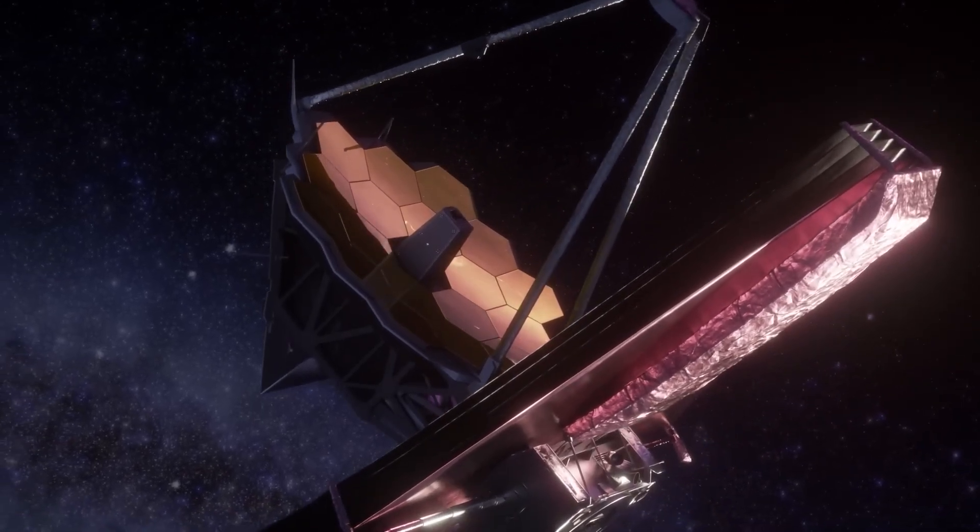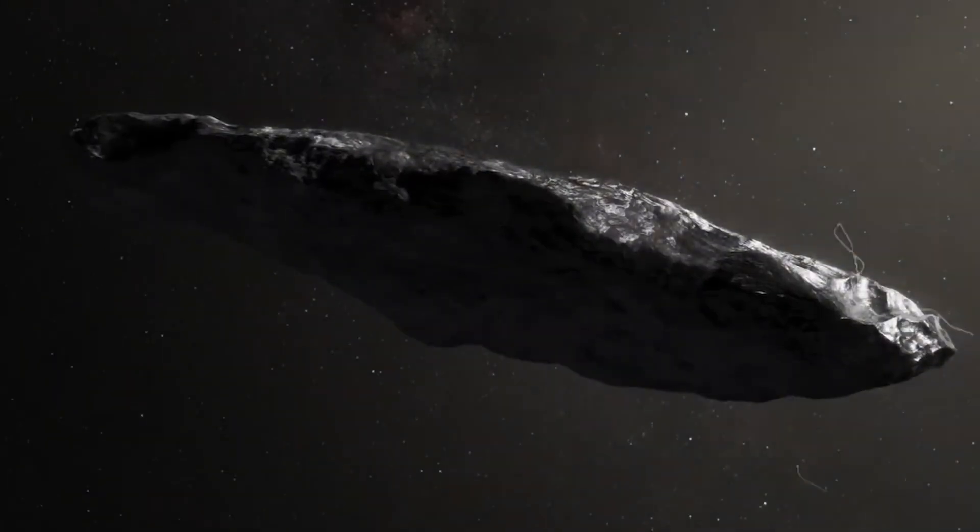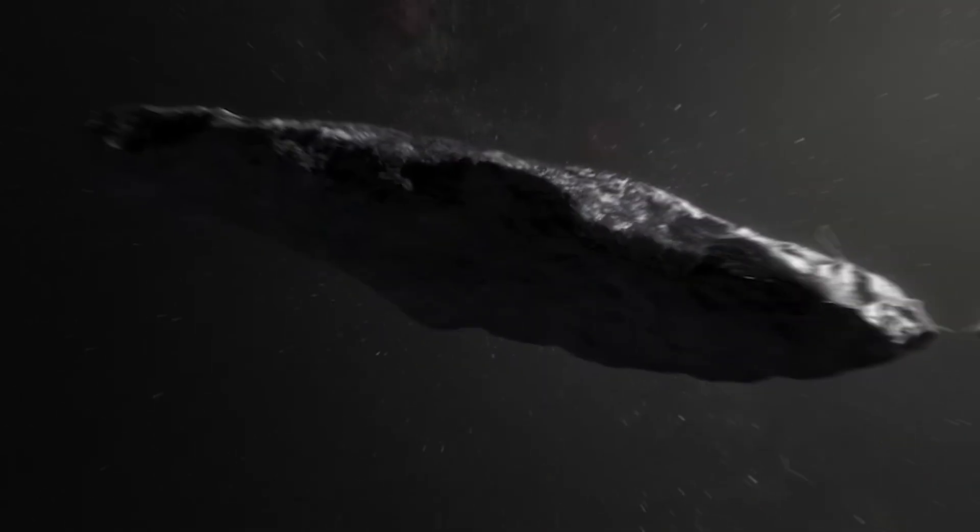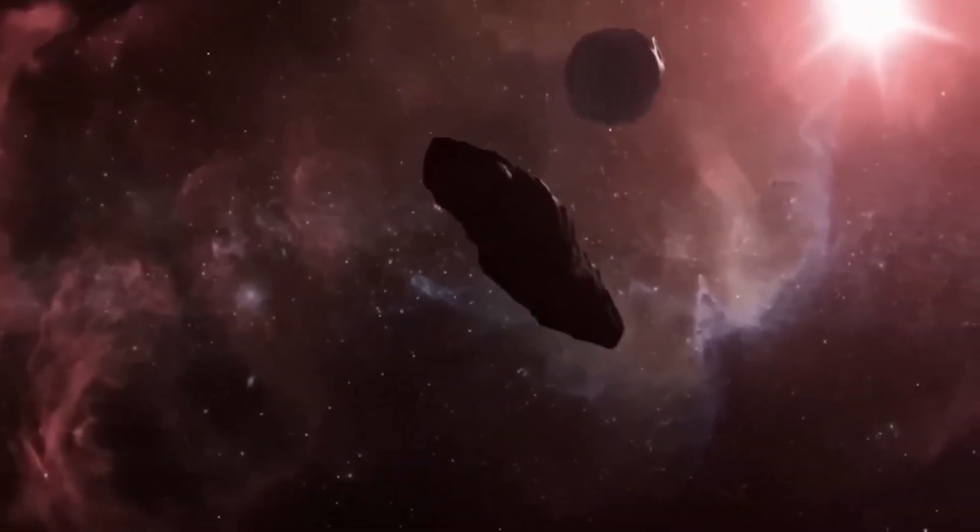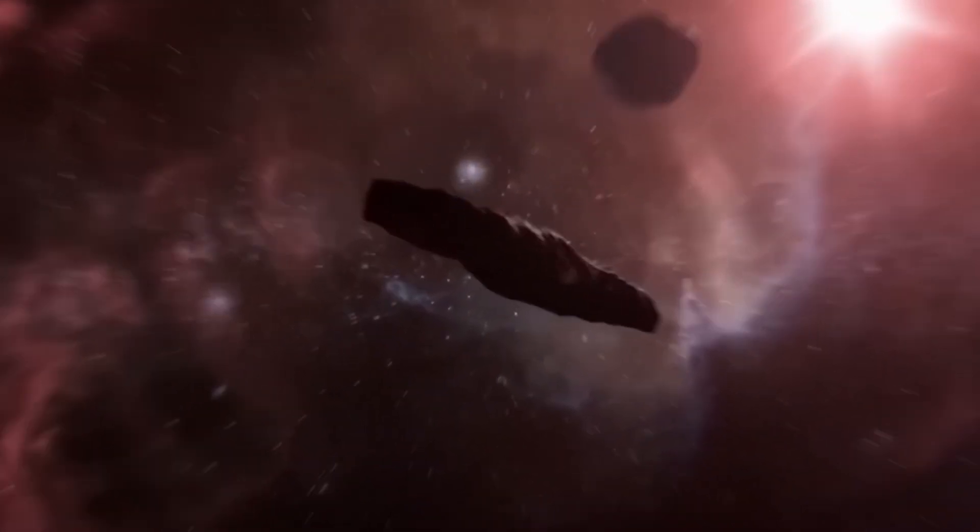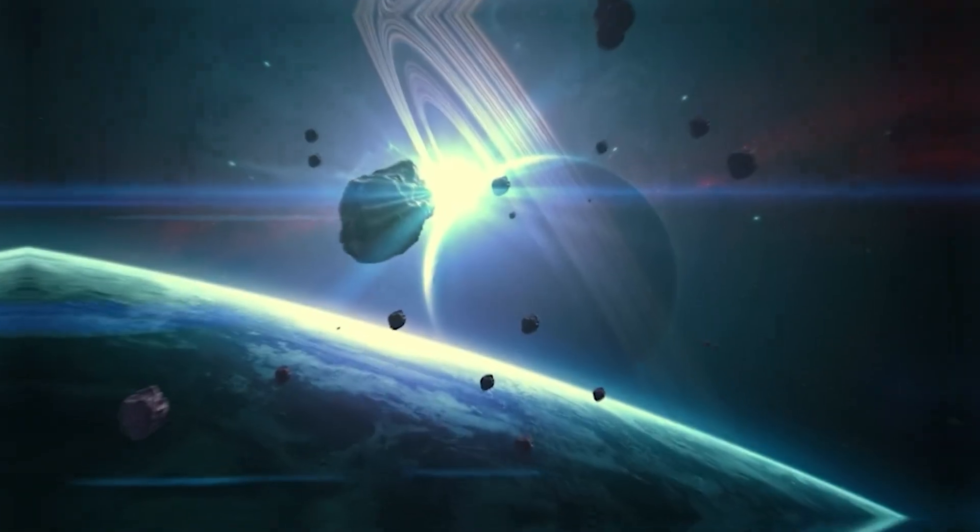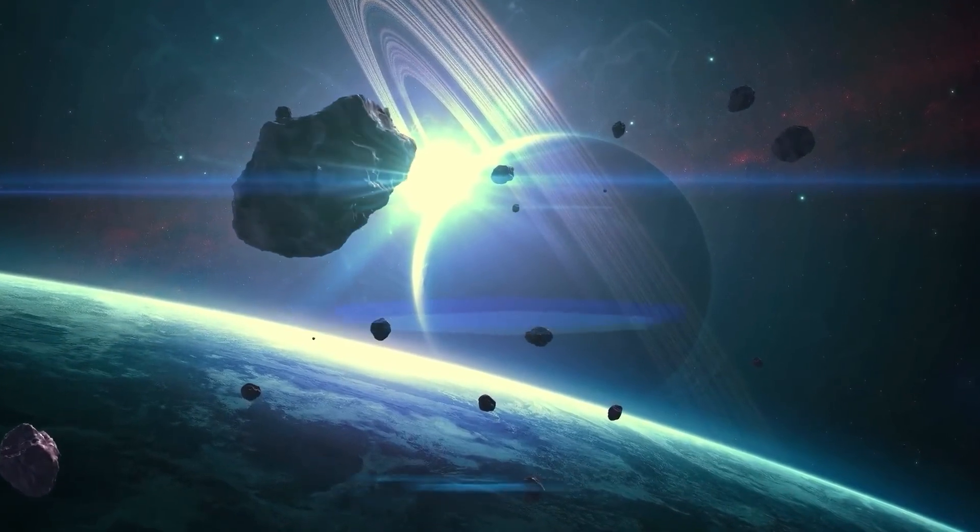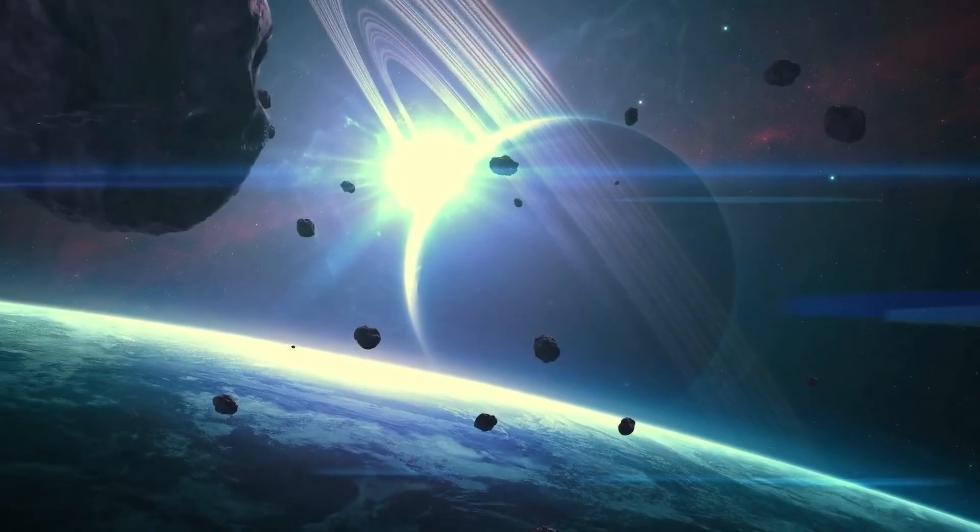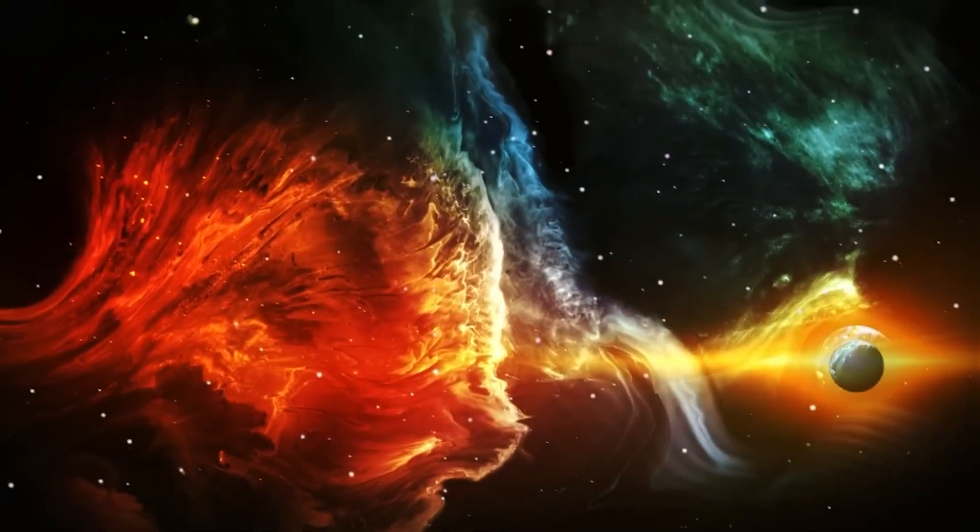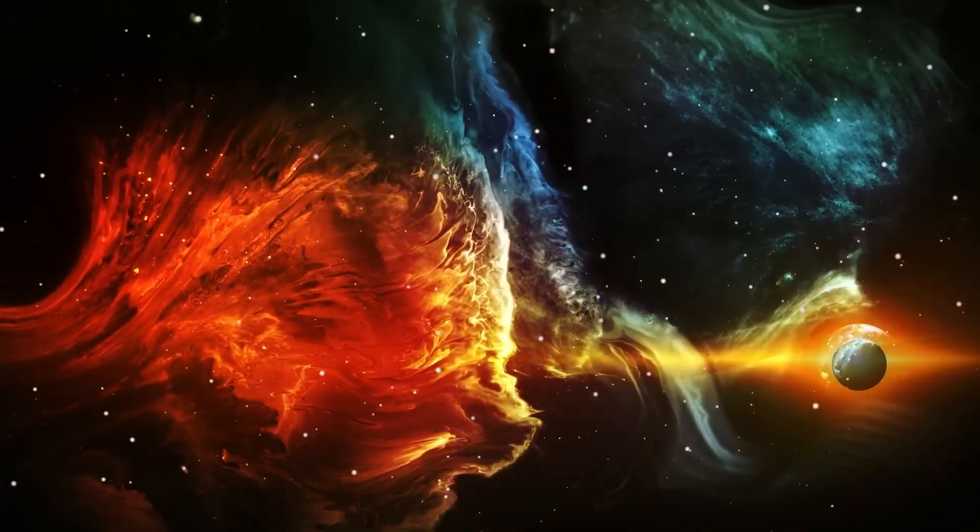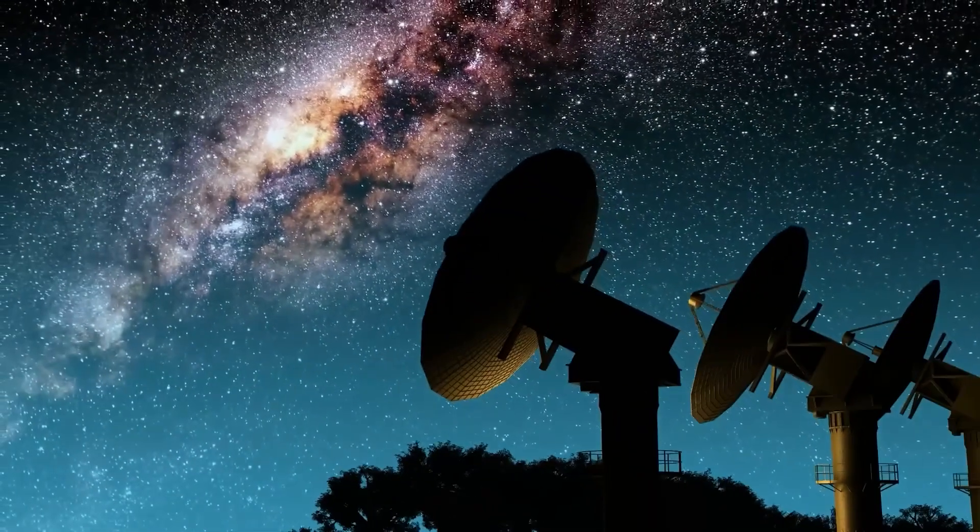Among the most fascinating findings is the presence of a highly reflective material that could explain its unusual brightness, as well as compounds that suggest Oumuamua was formed in a young, dynamic star system. These discoveries offer key clues about processes occurring in regions of the universe where matter is organized in completely different ways than in our cosmic neighborhood.